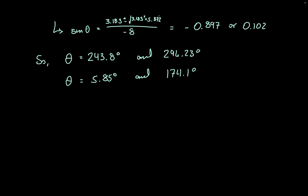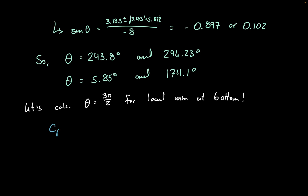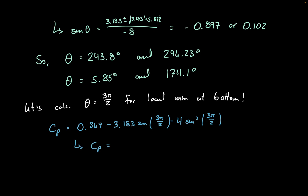We can also calculate the local minimum CP at theta equal to 3 pi divided by 2, which corresponds to the bottom of the cylinder. Evaluating CP equals 0.367 minus 3.183 times sine of 3 pi over 2, minus 4 times sine squared of 3 pi over 2, we get a local minimum CP at the bottom of the cylinder of negative 0.45.